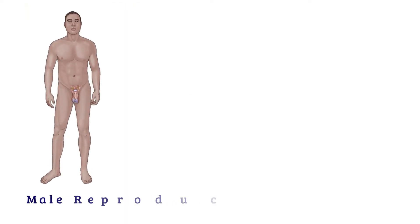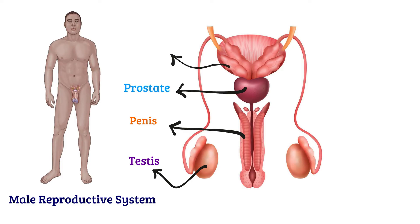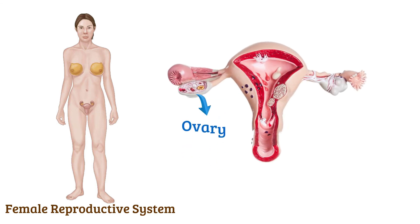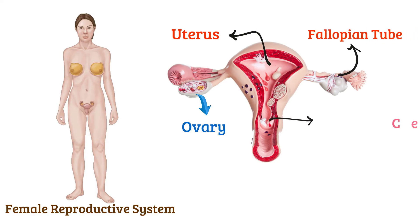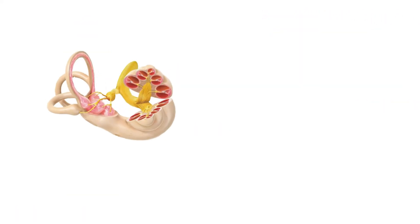Male reproductive system: testis, penis, prostate, seminal gland, ductus deferens, bulbourethral gland, urethra, epididymis. Female reproductive system: ovary, uterus, fallopian tube, cervix, vagina.